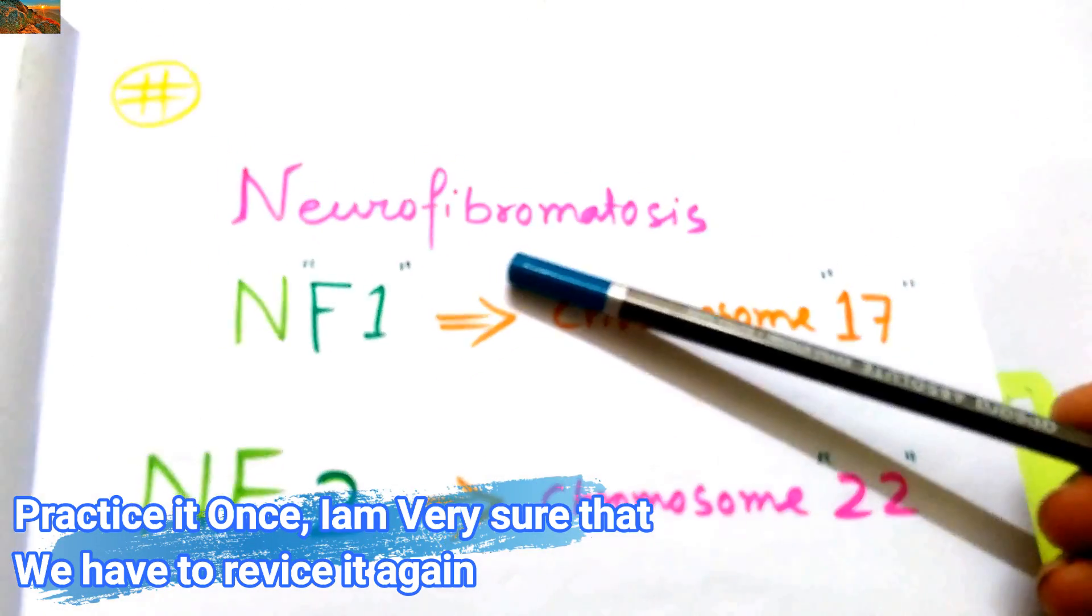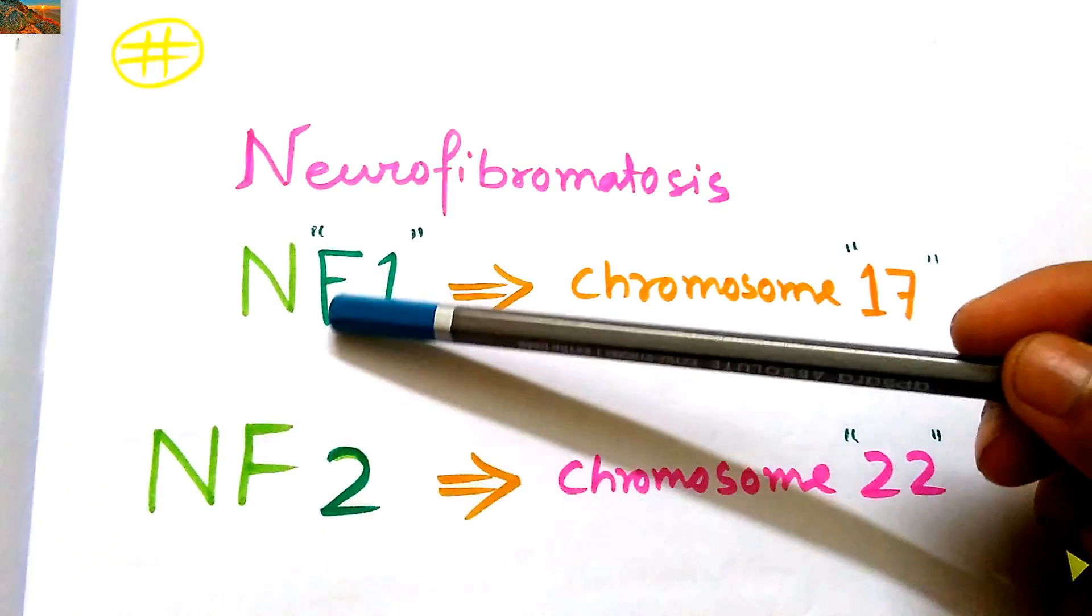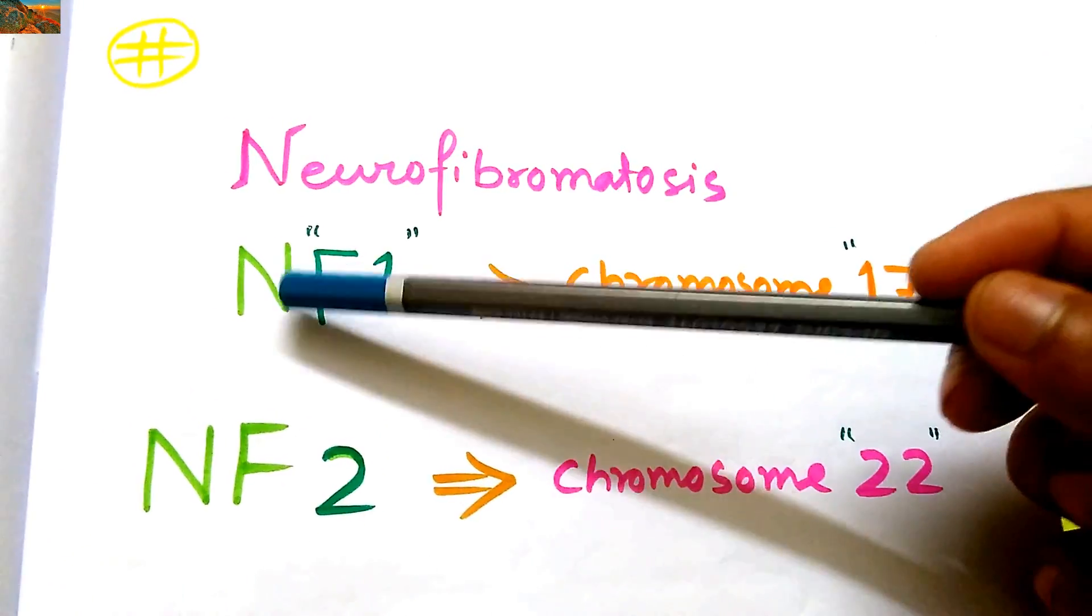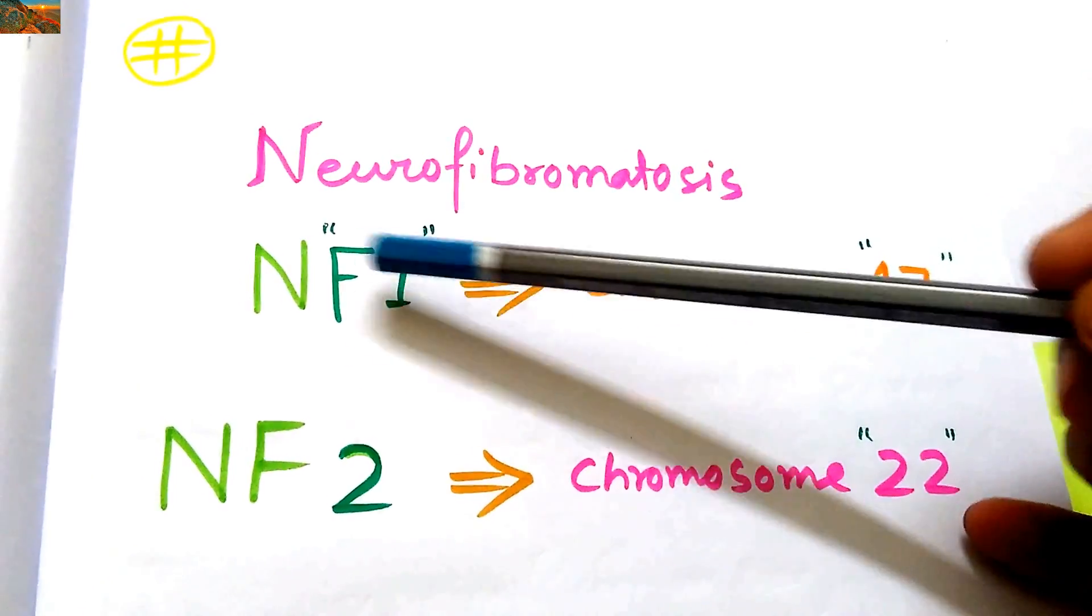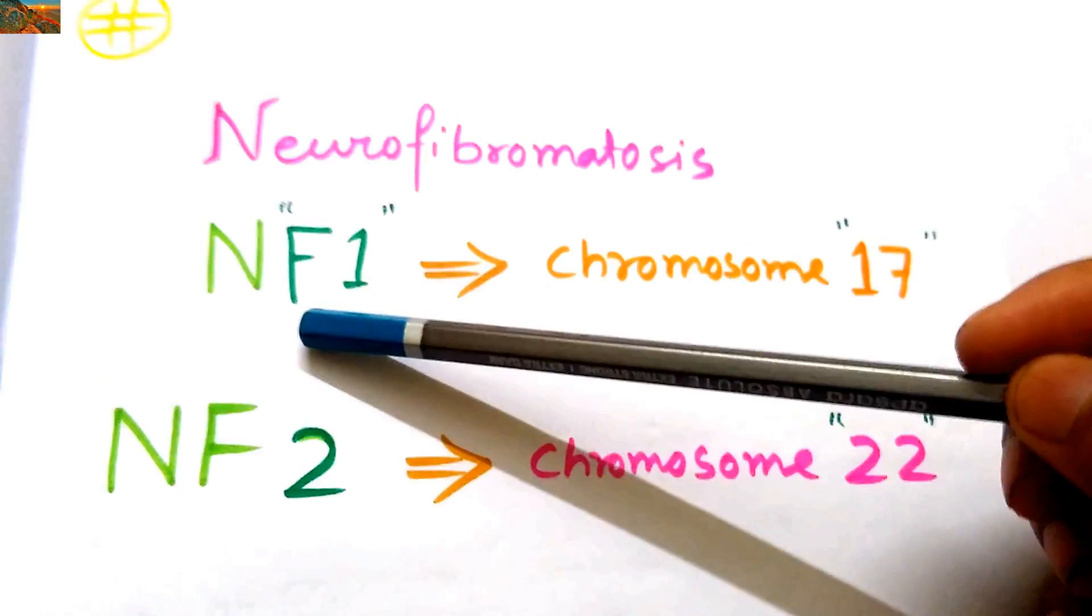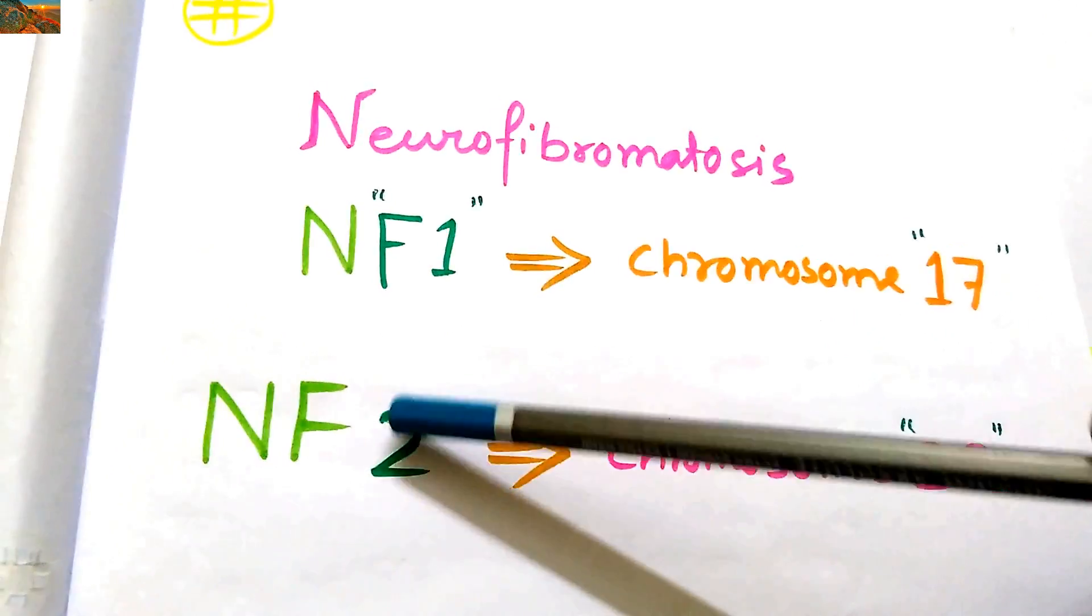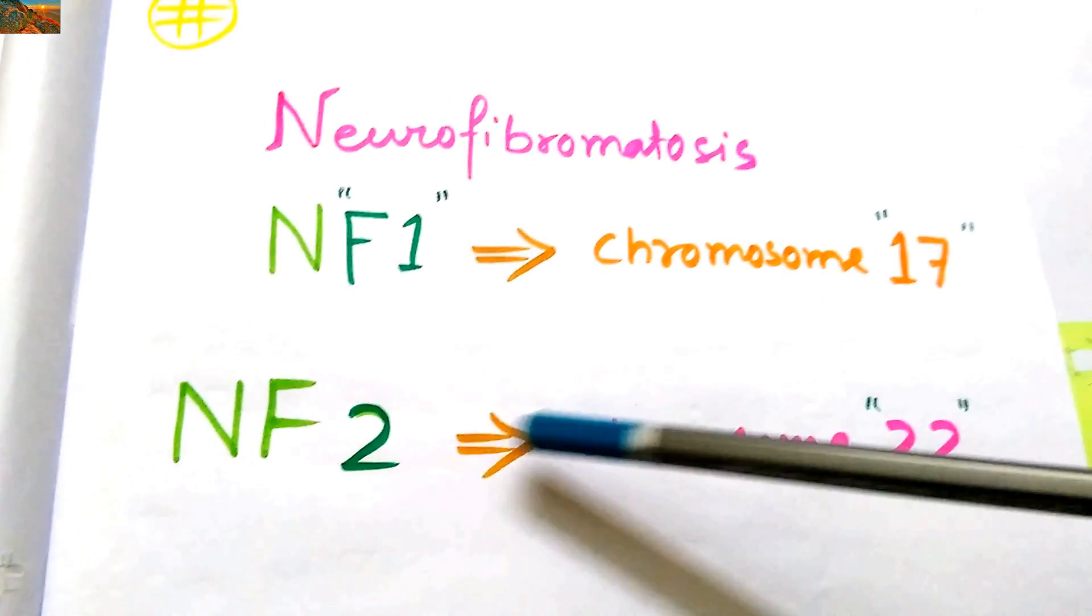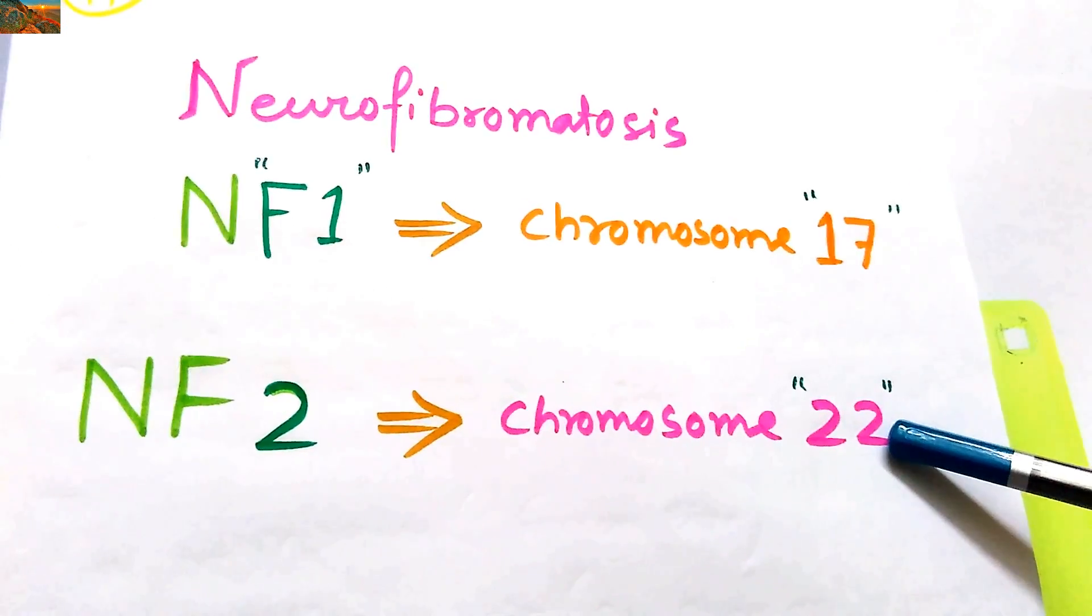Now it is neurofibromatosis, that is NF1 gene and NF2 gene. From the name itself we can find NF1. The F looks like 7, so here 17. So the chromosome location is 17. NF1 belongs to 17. Now NF2. Here as it is 2, so from 2 we can recall the chromosome number 22.